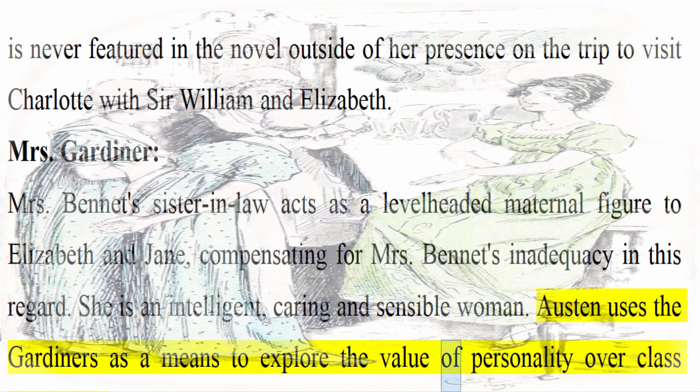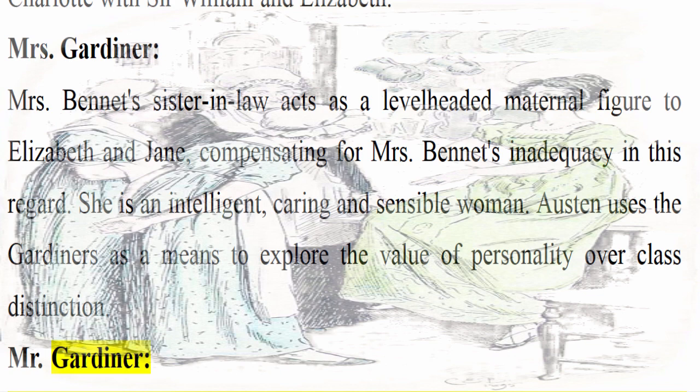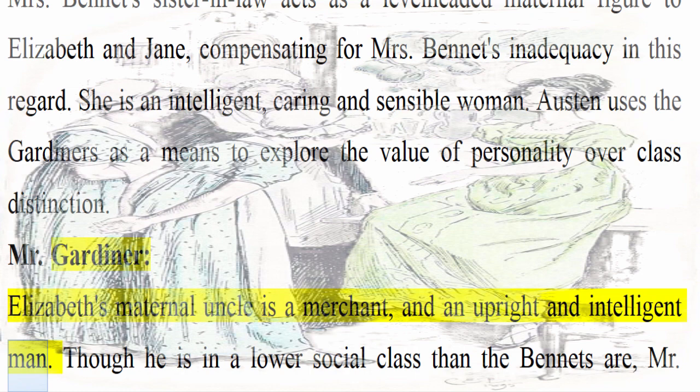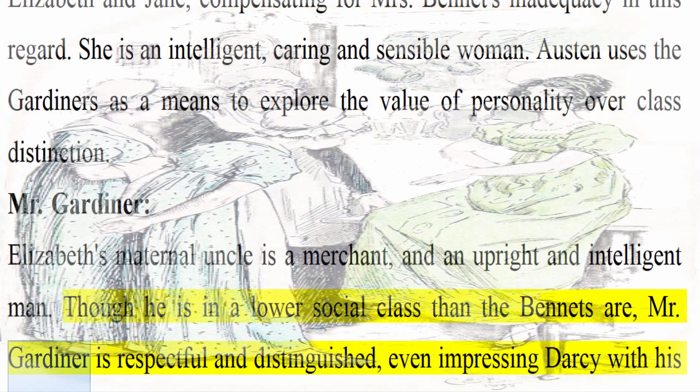Mr. Gardiner: Elizabeth's maternal uncle is a merchant and an upright and intelligent man. Though he is in a lower social class than the Bennets, Mr. Gardiner is respectful and distinguished, even impressing Darcy with his mannered behavior.